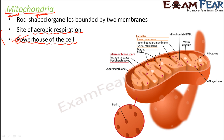Let us look at the double membrane of mitochondria. You have an outer membrane, and then you have the inner membrane — this inner line is the inner membrane. The space between the outer and inner membrane is known as the intermembrane space.